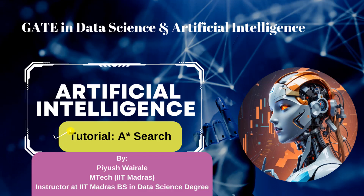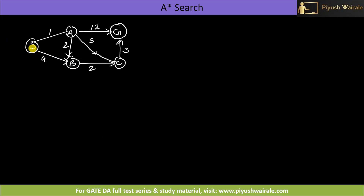In this tutorial we are going to discuss examples based on A* search. We'll take one example and try to solve it using the A* search algorithm. Here you can see a state space is given to us. This is the starting node S. From S I can go to A, from A I can go to B, from S I can also go to B, from B I can go to C, from A I can also go to C, and this is the goal node G.